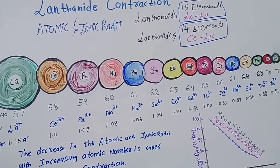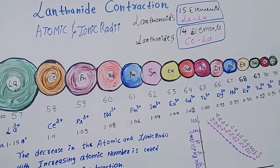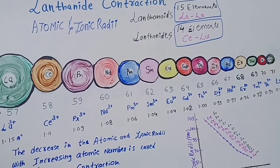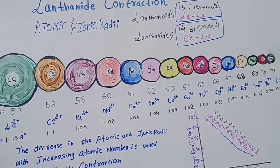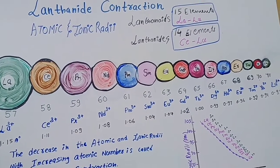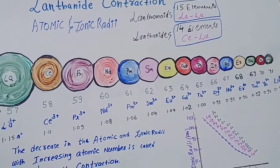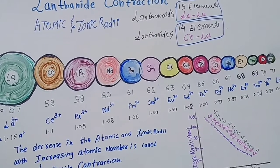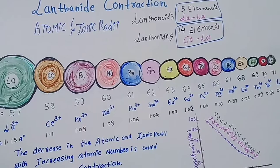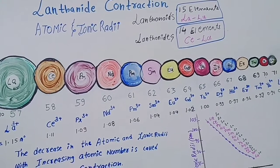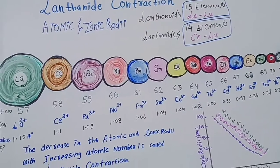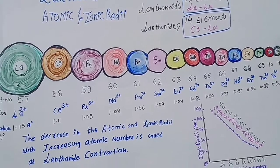So what is the difference between lanthanoids and lanthanides? The 15 elements from lanthanum to lutetium are: lanthanum, cerium, praseodymium, neodymium, promethium, samarium, europium, gadolinium, terbium, dysprosium, holmium, erbium, thulium, ytterbium, and lutetium. All these 15 elements are known as lanthanoids, and the other 14 elements from cerium to lutetium are your lanthanide elements.